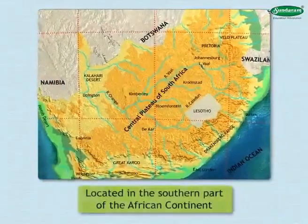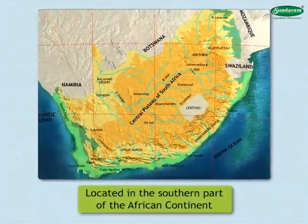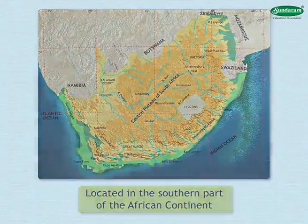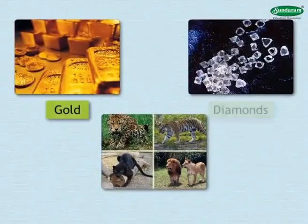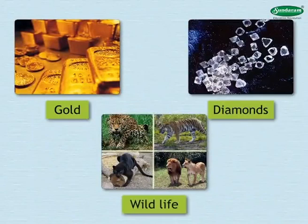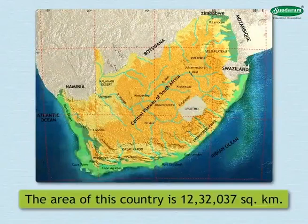South Africa is located in the southern part of the African continent. The country is known for minerals like gold and diamonds as well as its wildlife resources. The area of this country is 1,232,037 square kilometers.